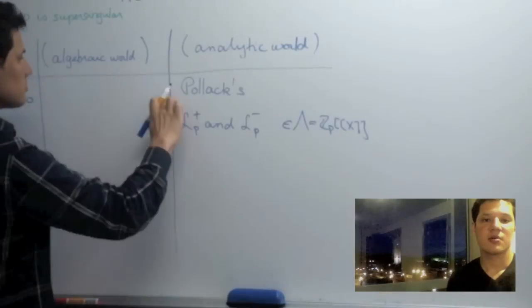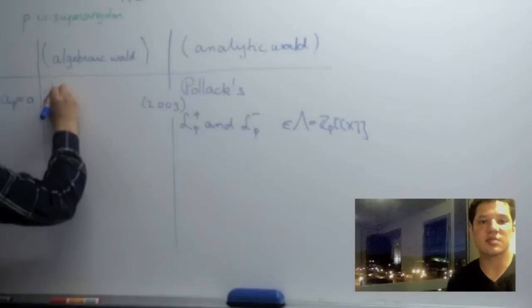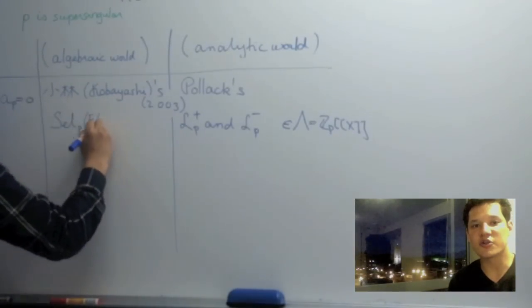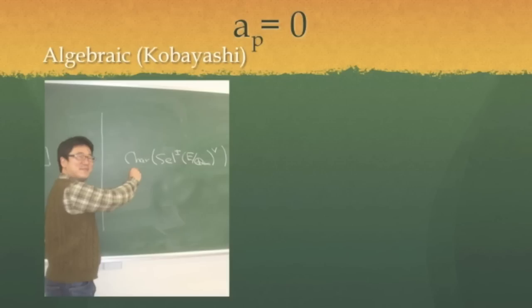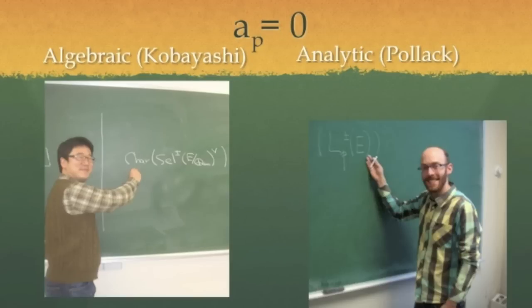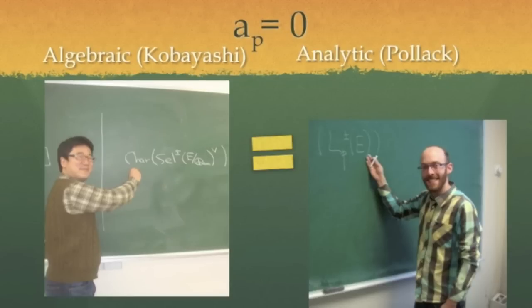The point here is that the Pontryagin duals of the plus minus Selmer groups are finitely generated torsion as lambda modules. You can then formulate the main conjecture. As asking whether these plus minus characteristic ideals of Kobayashi and the ideals generated by the plus minus p-adic L functions of Pollack are the same.